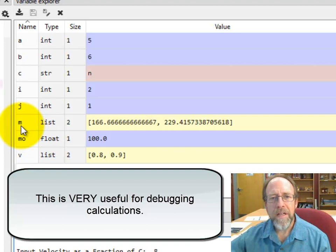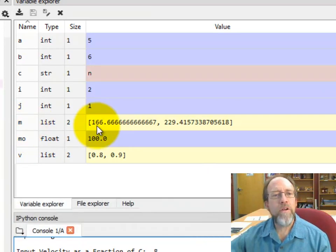So m, there's the value, the first calculated value and the second calculated value. v, there's the point eight that I entered and the point nine that I entered, and m0, which is a float, is that.